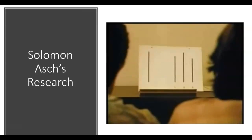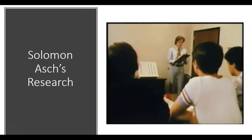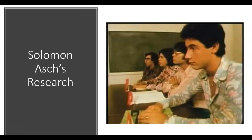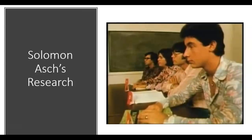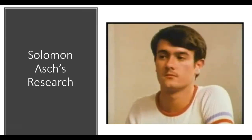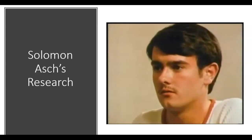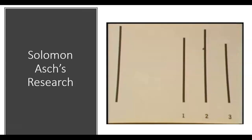Asch found subjects went along with the group on 37% of the critical trials, but through interviews he found they went along for different reasons. One subject's yielding was based on a distortion of his judgment—he genuinely believed the group was correct, thinking 'There are four of them and one of me; they must be right.'